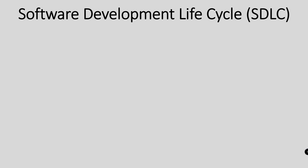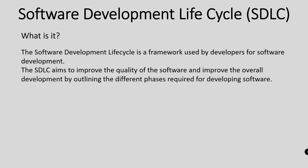This video will be explaining what the software development lifecycle is and the different stages it has. The software development lifecycle has different models that organisations use for different reasons. The different models will be listed at the end of the video and separate videos will be made explaining each different model. The software development lifecycle is a framework used by developers for software development. It aims to improve the quality of the software and improve the overall development by outlining the different phases required for developing software.